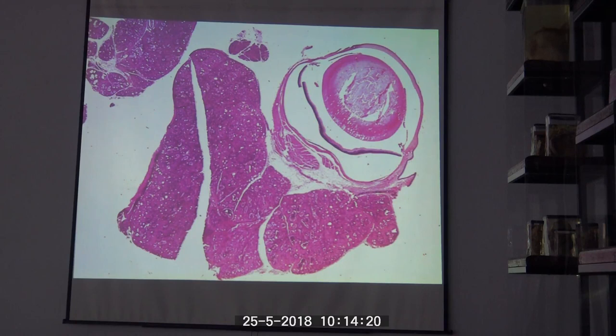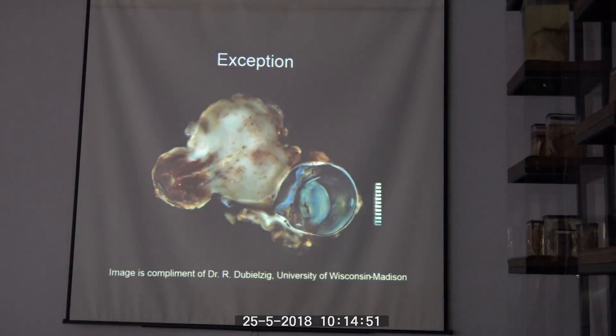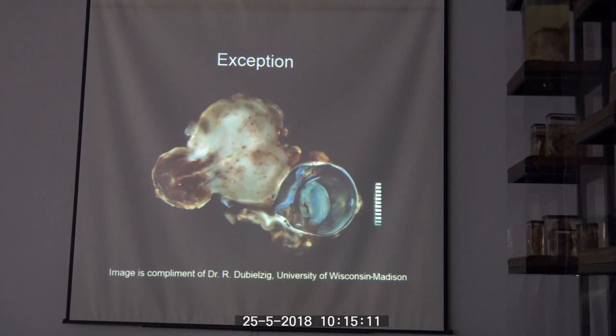Retinal detachment is more likely because it takes time for formalin to penetrate through tissues. The more tissue you have around the globe, the longer it takes for formalin to penetrate and fix the intraocular structures. This is why I like the injection technique when dealing with formalin. There are exceptions when you still want to keep everything together — for example, when the disease process, like this mast cell tumor, is in the extraocular tissues, and you want to preserve surgical margins.